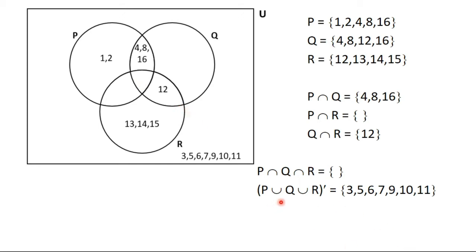The complement region — members outside all three circles but inside the universal set — contains 3, 5, 6, 7, 9, 10 and 11. These are members in the universal set but not in P union Q union R. When you add all members in the Venn diagram together, you should get the universal set: 1, 2, 3, 4, 5, 6, 7, 8, 9, 10, 11, 12, 13, 14, 15 and 16.